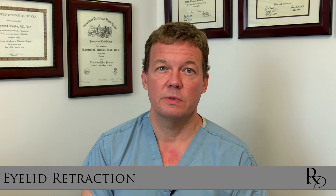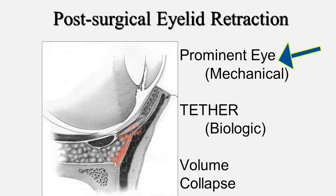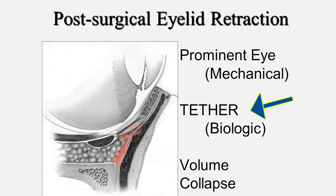Post-surgical eyelid retraction presents a very unique problem. There's a prominent eye component, and we're going to discuss how we can reduce that — often in a very simple way — with a relatively small surgery to remove a little bit of fat and move the eye back. But for this portion of the discussion, we're going to talk about the tether, or the scar that forms, as you can see in the pink, on and around the lower eyelid.